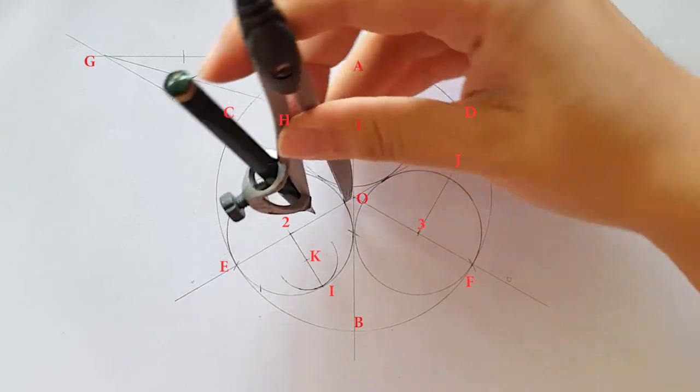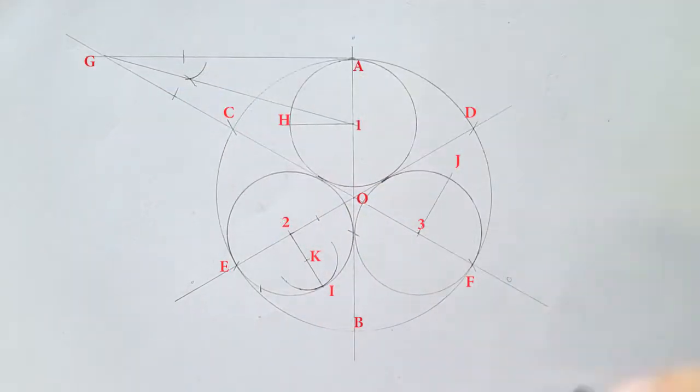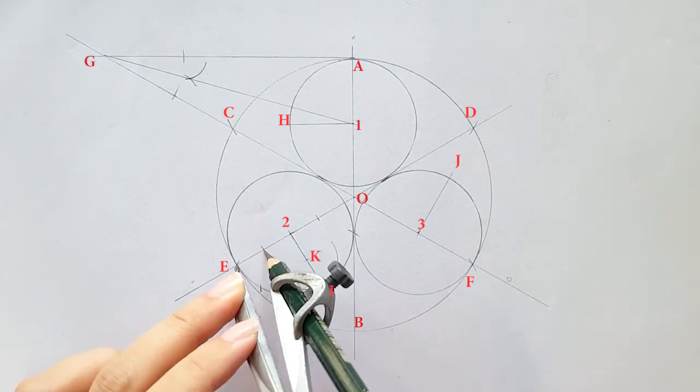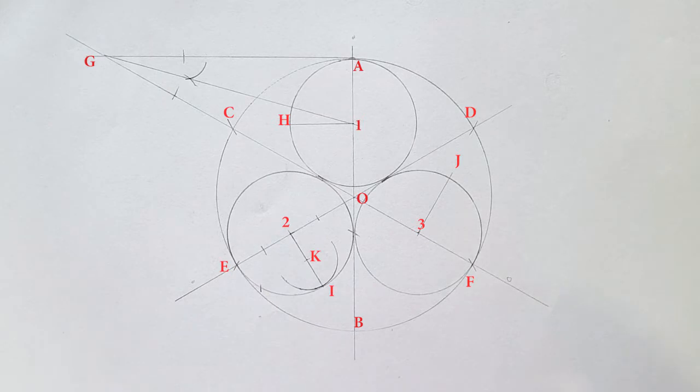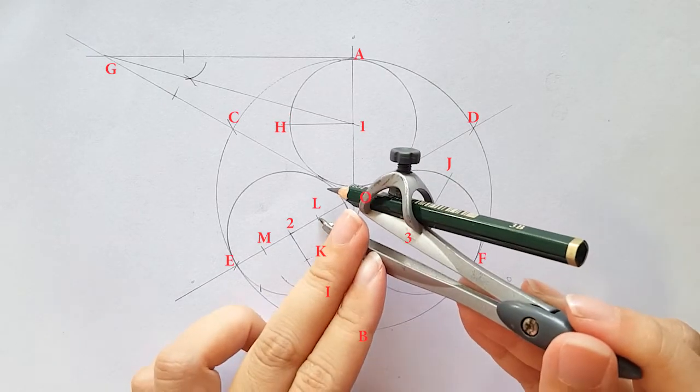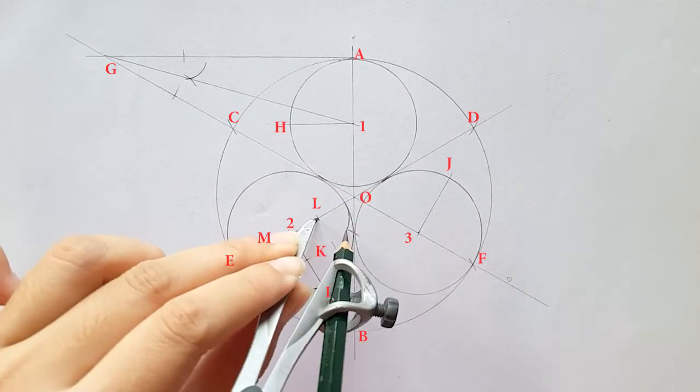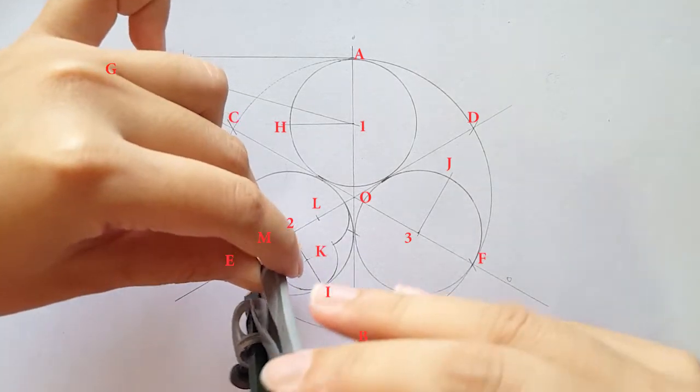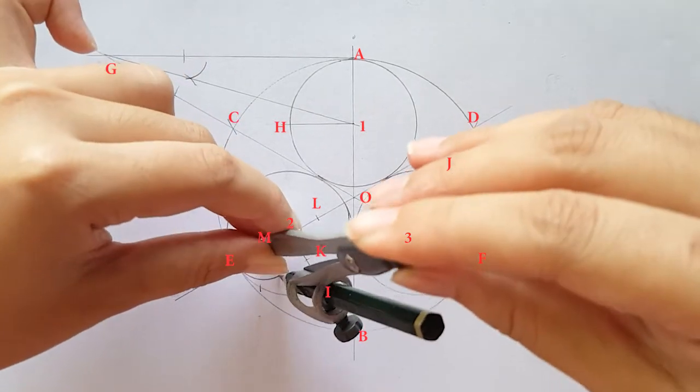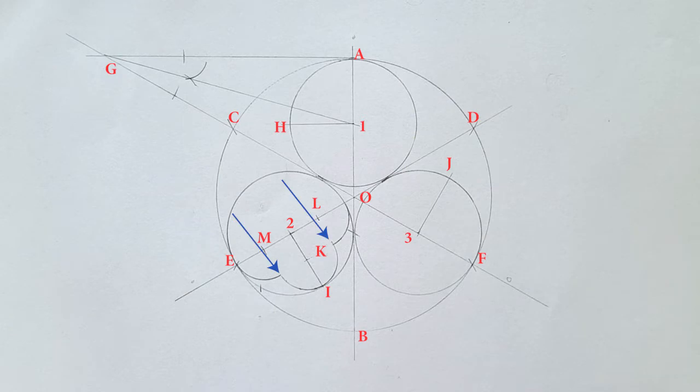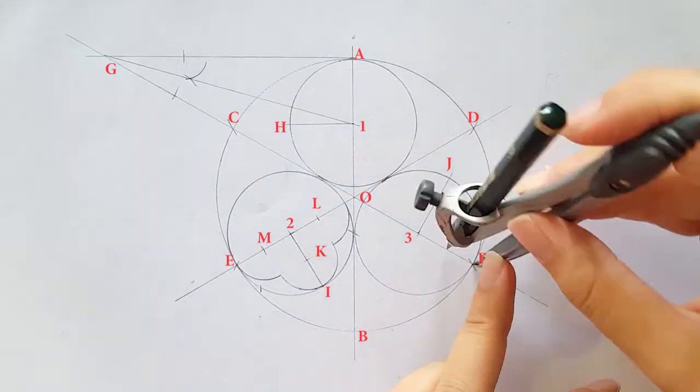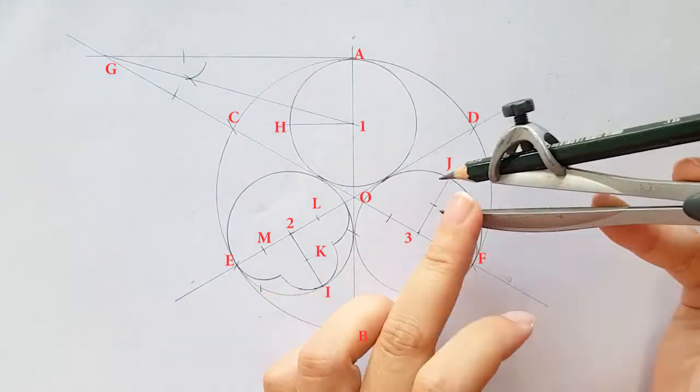Then, place your compass on point L and M to draw a quarter arc. Make sure the lines are joining together to form a path. Repeat these steps on other inscribed circles.